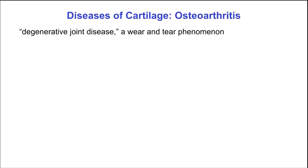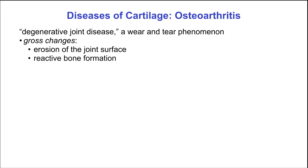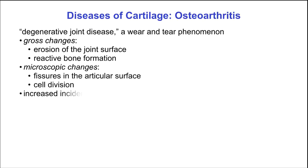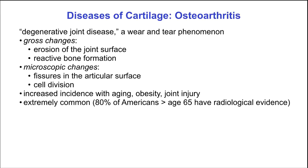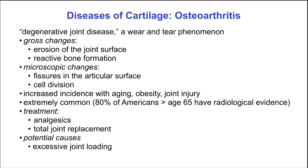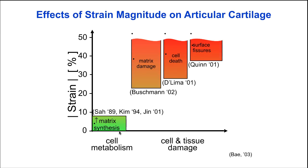Osteoarthritis is a degenerative joint disease associated with tissue wear and tear. Gross changes include erosion of the joint surface and reactive bone formation. Microscopic changes include fissures in the articular surface and cell division. The incidence of osteoarthritis increases with aging, obesity, and joint injury. It is extremely common, with 80% of Americans over age 65 showing some radiological evidence of the disease. Treatments include analgesics and, when more severe, total joint replacement. Potential causes include excessive joint loading and inflammation-mediated matrix degradation. As the matrix loses mechanical stiffness, strain increases beyond the optimal range for matrix synthesis to higher values, resulting in matrix damage, cell death, and surface fissures.